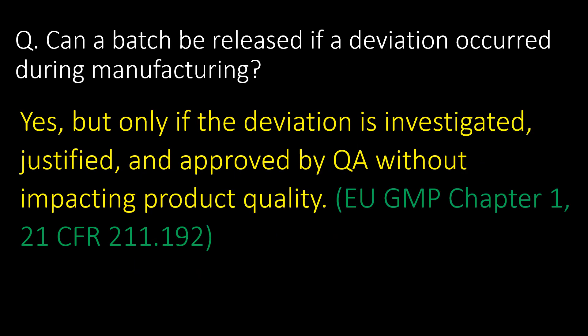This is a very frequently asked question: can a batch be released if a deviation occurred during manufacturing? The answer is yes, but only if the deviation is investigated, justified, and approved by QA without impacting product quality. Reference guidelines: EU GMP Chapter 1 and 21 CFR 211.192.